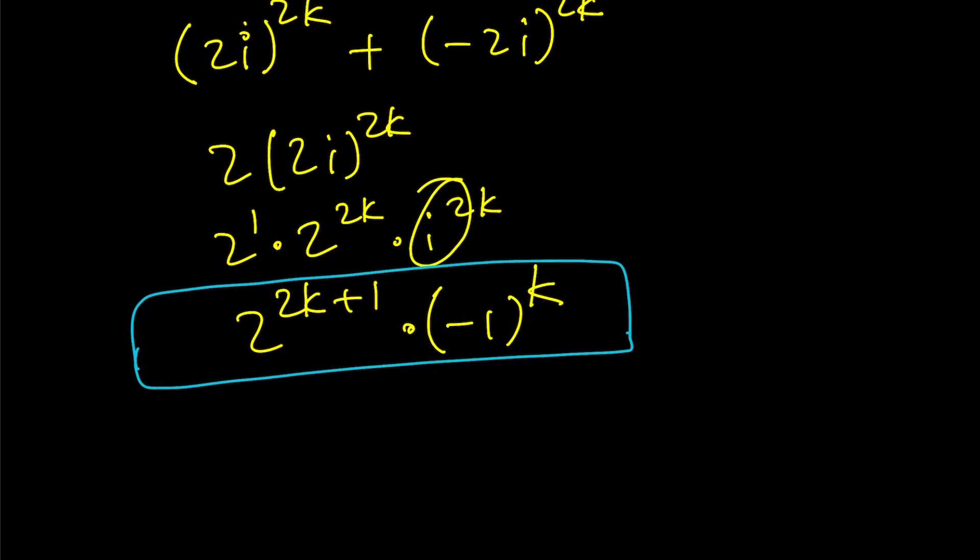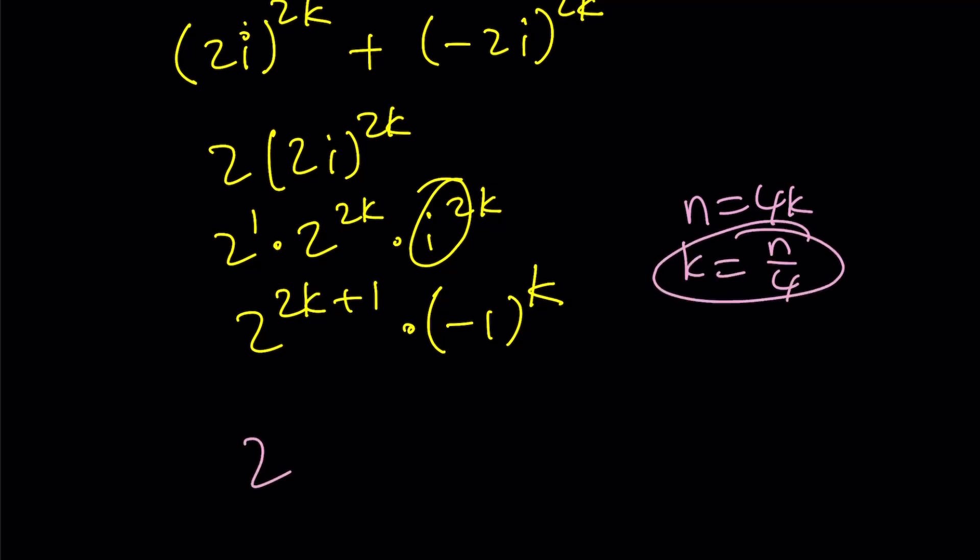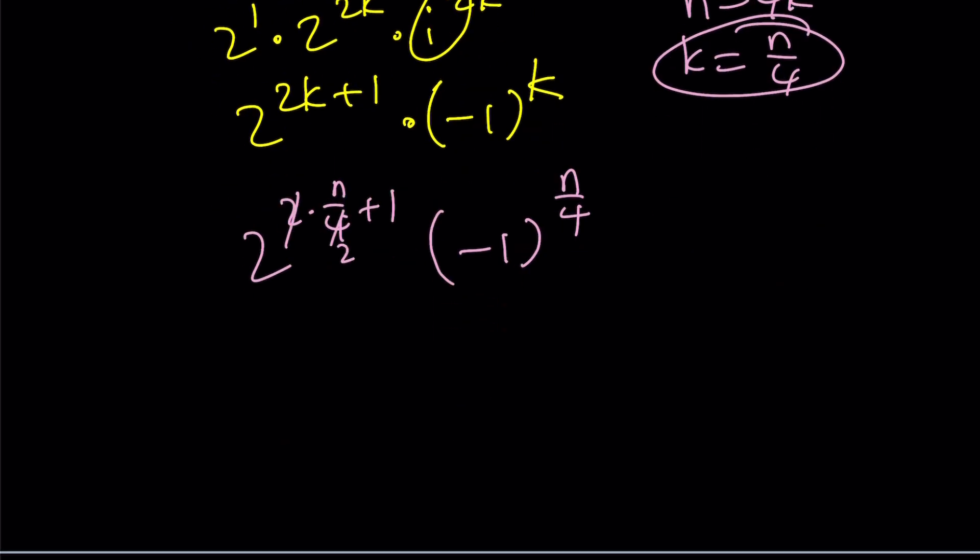By the way, this... Oh, one thing before I forget. This expression is actually in terms of k. So, I have to convert it. Well, what is the conversion formula? n equals 4k, remember? So, k is equal to n divided by 4. So, I have to back-substitute that. 2 to the power 2 times n divided by 4 plus 1. And then times negative 1 to the power n over 4. Now, this is the fun part. These two are going to cancel out. You're going to get 2 to the power n over 2 plus 1. And I'm going to multiply it by negative 1 to the power n over 4. Of course, n is a multiple of 4, so n over 4 is always an integer. So, that's my expression. But again, we're going to write it in a different form.